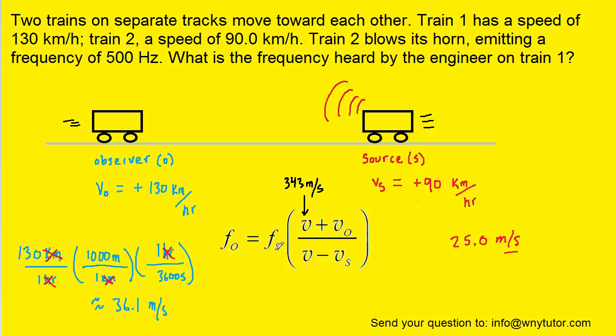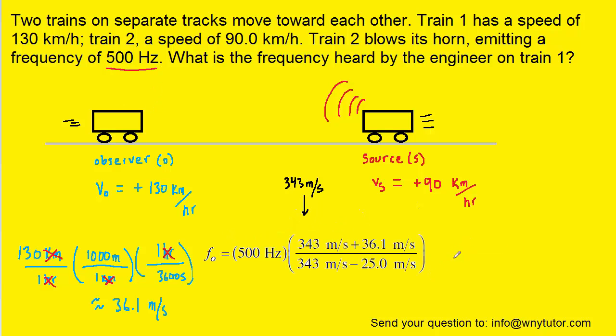Notice that F sub S is the frequency that the source is emitting, and that was stated as 500 Hertz. And once you plug into the formula, you should obtain a value of approximately 596 Hertz. So that would be the frequency that the observer measures.